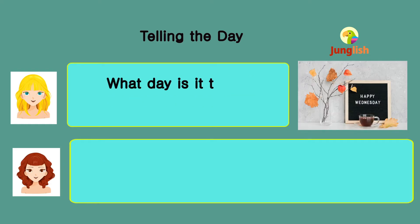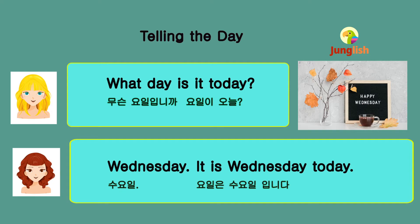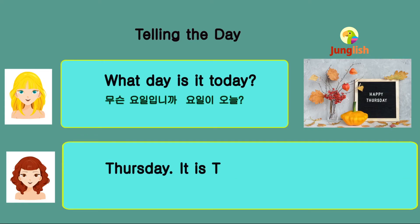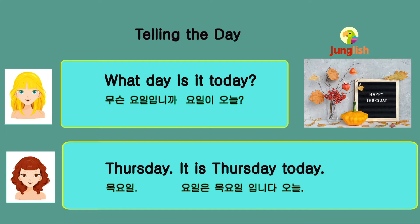What day is it today? Wednesday. It is Wednesday today. Wednesday. It is Wednesday today. What day is it today? Thursday. It is Thursday today. Thursday. It is Thursday today.